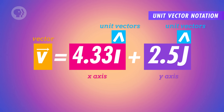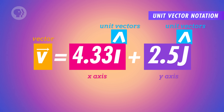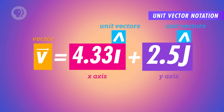So our vector has a horizontal component of 4.33 and a vertical component of 2.5. In what's known as unit vector notation, we'd describe this vector as v⃗ = 4.33î + 2.5ĵ. The arrow on top of the v tells you it's a vector. And the little hats on top of the i and j tell you that they're the unit vectors, and they denote the direction for each component. î just means it's the direction of the x-axis, and ĵ is the y-axis.